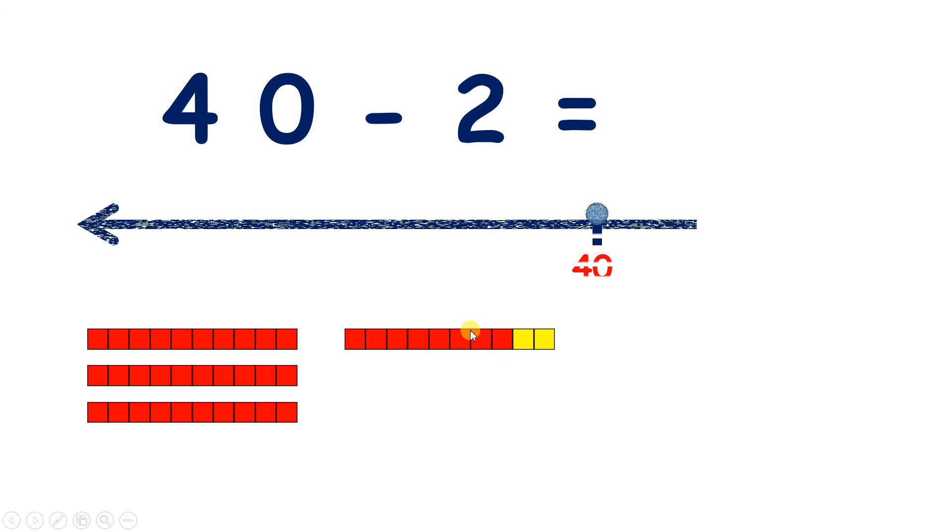So on a number line, we're on 40, and we go back 2, then we get to 38.